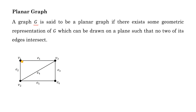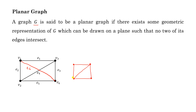If I insert an edge between V1 and V4 — say this edge is E6 — these two edges E6 and E4 intersect with each other. But we can draw a geometrical representation of this graph in such a way so that no two edges intersect with each other. Look at this: this was the previous graph, and E6 can be drawn in this way.